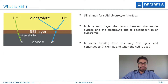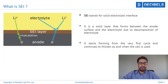Over time, as and when the cell goes on getting used, the thickness of the SEI layer goes on increasing because the electrolyte decomposition also contributes to this and goes on worsening over time. You can see here in the image how exactly the SEI layer forms — it is because of a combination of deposition of lithium ions and the decomposition of electrolyte material onto the anode surface.